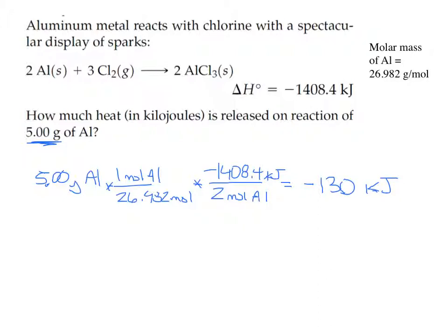If they're asking how much heat is released, you may not have to enter the negative sign, because the negative sign implies release. You wouldn't say 'negative 130 kilojoules released' — you'd just say '130 kilojoules released.' Be aware of that in Mastering Chemistry; sometimes they don't want the negative because it's implied. But it is actually negative 130, because as you said, it's an exothermic reaction.